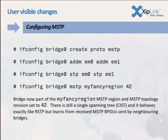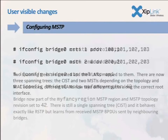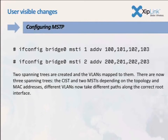Someone was going to libraryify ifconfig — has that happened yet? Currently you can't set the region at the same time as enabling spanning tree because of how ifconfig parsing works. Adding VLANs as a range would also be nice, because if you've got 4,000 VLANs, typing them all by hand is not a pleasant experience.